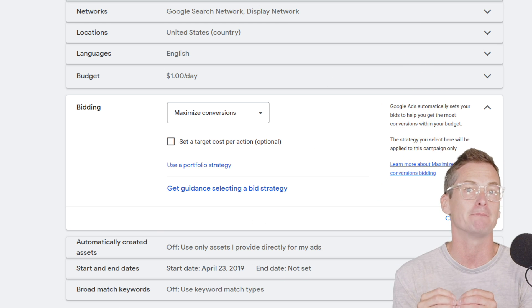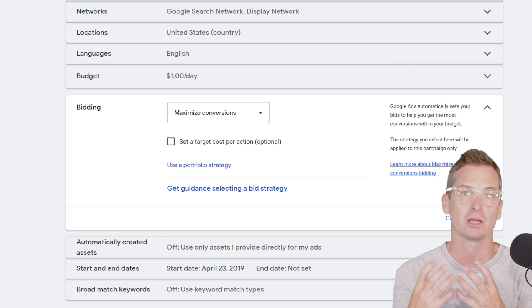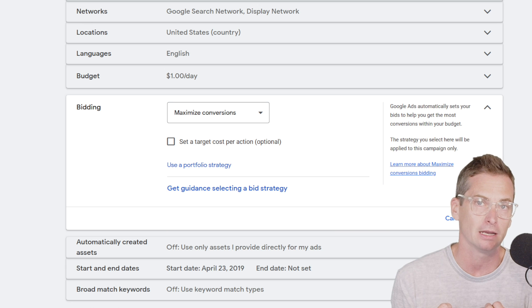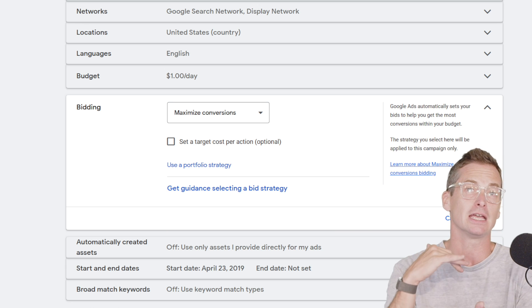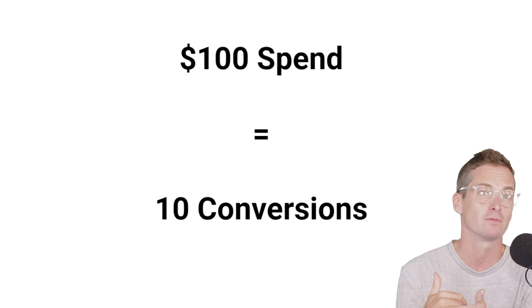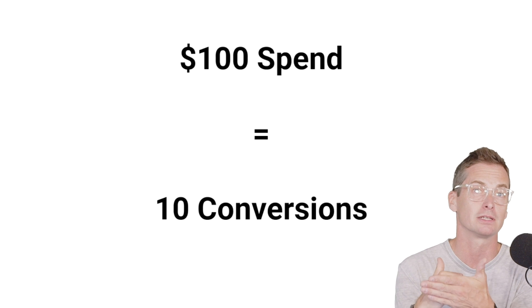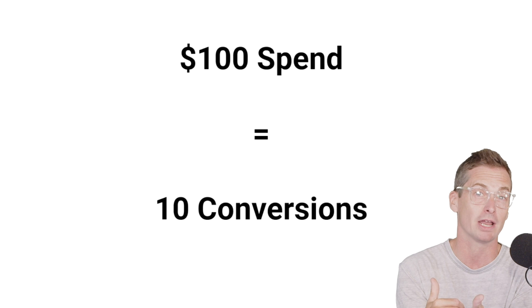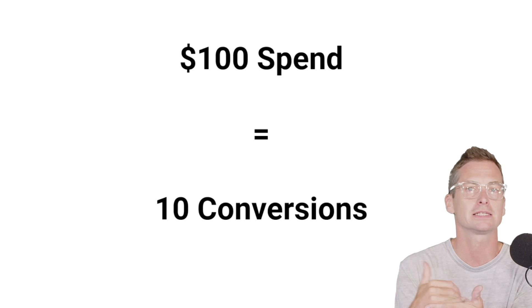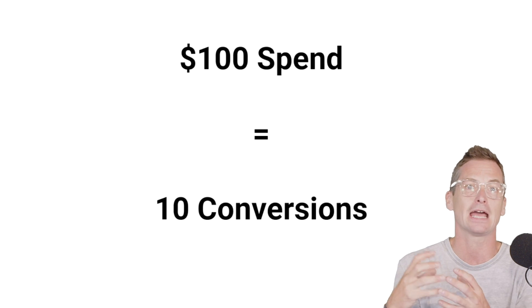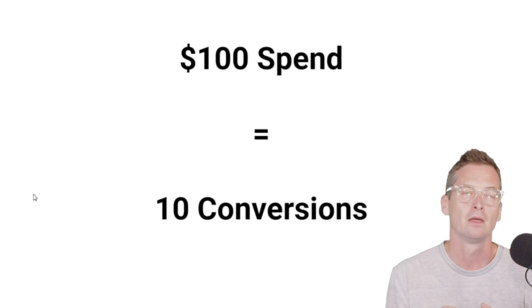It's going to spend that budget and just bring back what it can. So if you have a Maximize Conversions campaign running at $100 a day, let's say that you see 10 conversions coming back in.